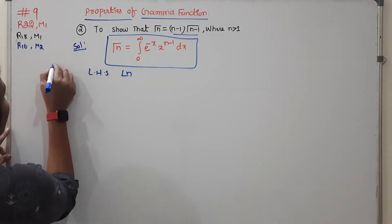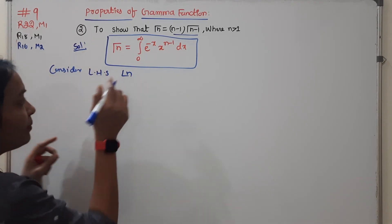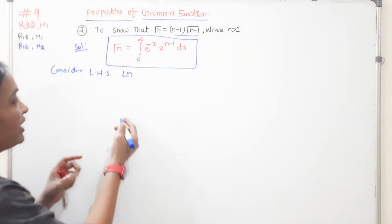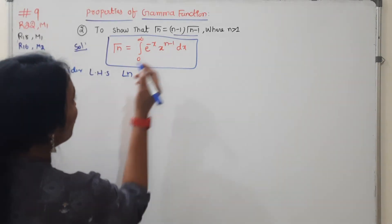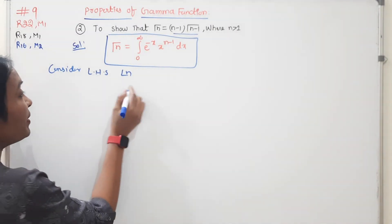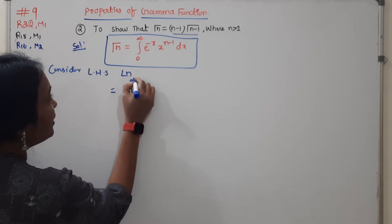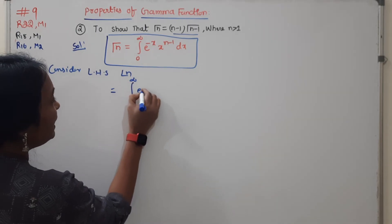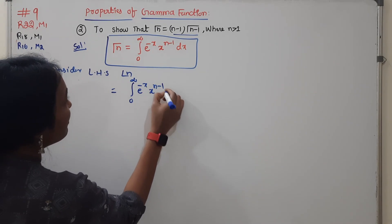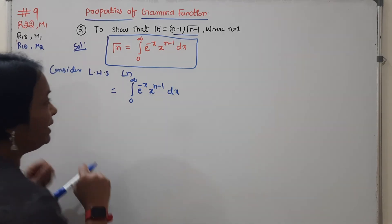Consider the LHS part: gamma(n). From our gamma definition, gamma(n) is equal to the integral from 0 to infinity of e to the power of minus x into x to the power of n minus 1, dx.